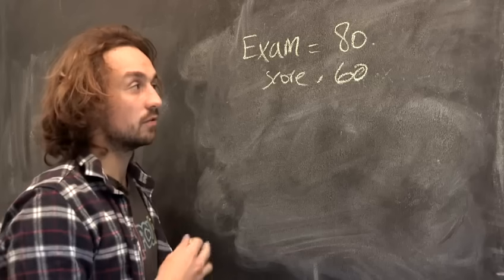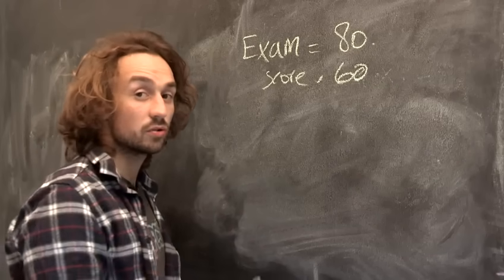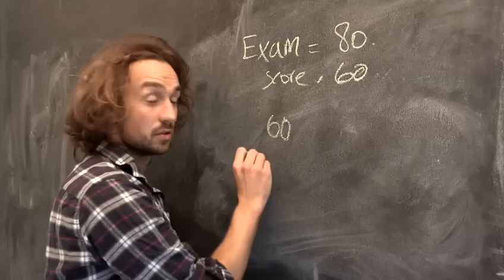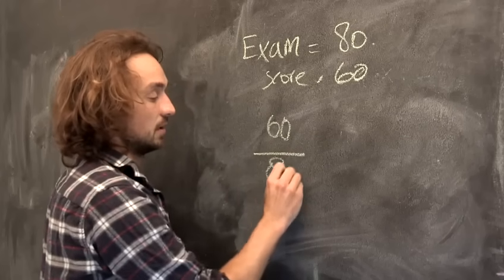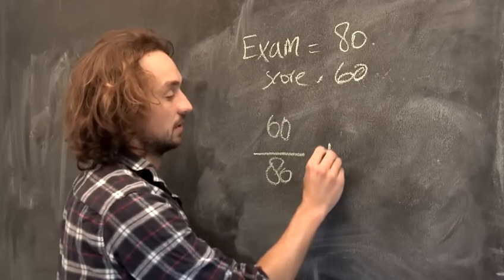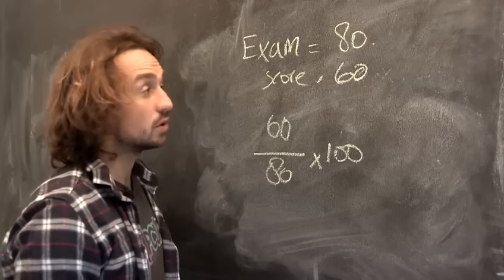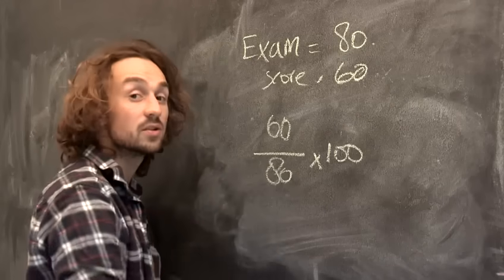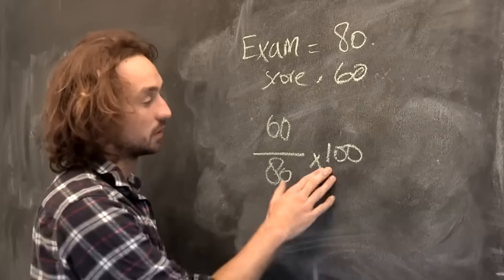Let me talk you through how to do it. You want to find 60 out of 80 times 100. So all you have to do is take your score, divide by the total number it's out of, and multiply by 100.